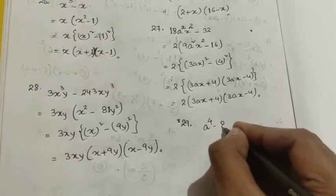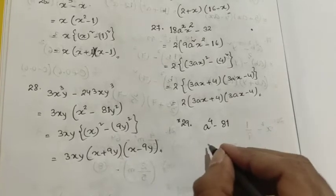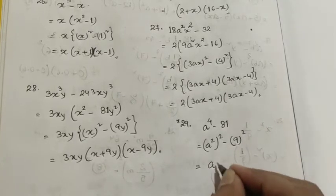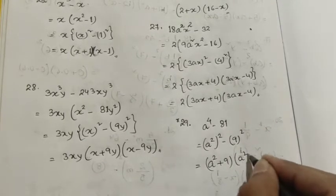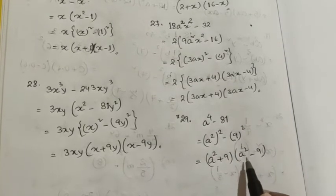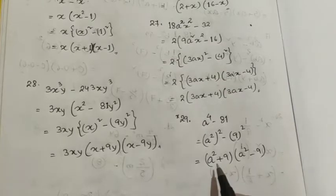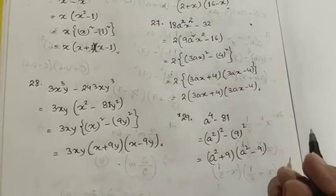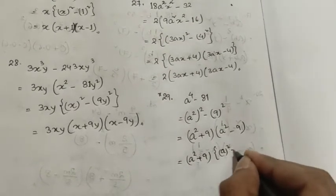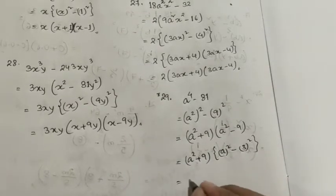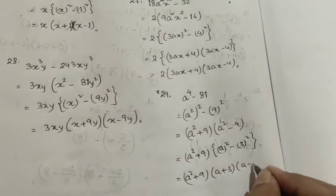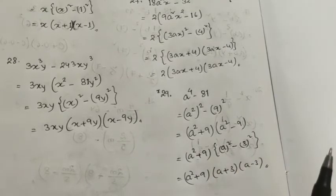Question number 29 is a⁴ - 81. a⁴ can be written as (a²)² and 81 = (9)², so it becomes (a² + 9)(a² - 9). Now (a² - 9) can again be factorized as (a + 3)(a - 3) since it is in the form a² - b². So the full factorization is (a² + 9)(a + 3)(a - 3). The formula is applied twice here.